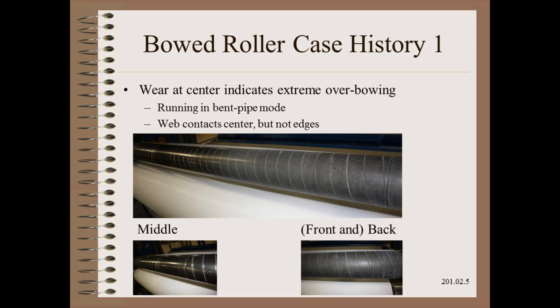This bowed roller is worn much more in the middle than on the ends. Here, we can offer two working theories that meet all the information we are given thus far. First is that the bowed roller might be operating toward the bent pipe mode. The picture seems to show a pretty heavy bow followed by a very short after-spreader span. It is plausible that the paper web can't follow the abrupt change requested of it. In response, the attentive operator will likely orient the bow a bit into the sheet run towards the bent pipe mode, and wear will thus move to the center as a result.